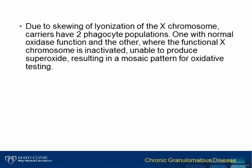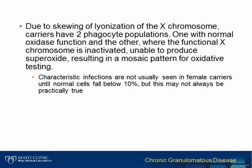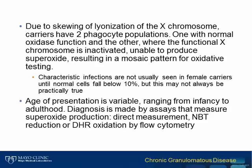In carrier females of X-linked CGD, due to skewed lyonization, there is the presence of two populations for neutrophil oxidative burst, and this does not remain static over time but can change with age-related skewing of lyonization observed with increasing age. In general, female carriers become symptomatic when they have less than 10% of cells with normal neutrophil oxidative burst. However, in practice we have seen clinically symptomatic females with higher proportions of normal neutrophils. The age of presentation is variable depending on the genetic defect and residual NADPH oxidase activity.